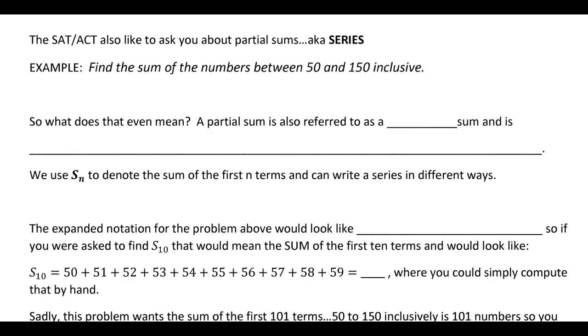Okay, so this is where we jump from a sequence into a series. Now, a series is just basically a summation. What it means is that you are adding a bunch of numbers together. So instead of just listing out a pattern, you start adding them. So an example that I've seen on an ACT is find the sum of the numbers between 50 and 150 inclusive. So that does mean including these two numbers here on the end.